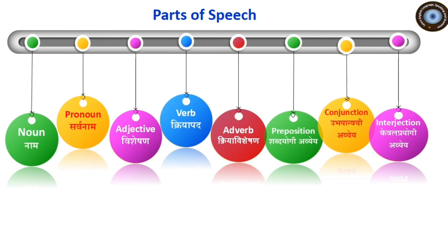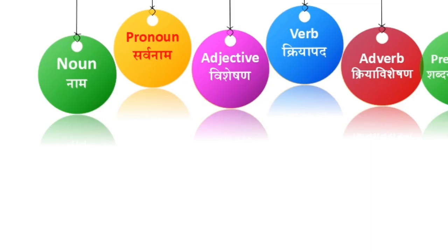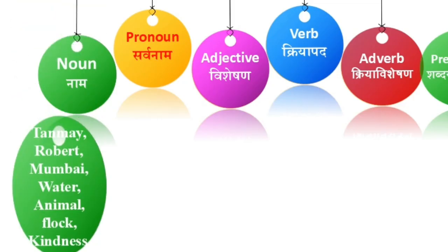Now let's take examples. For example, which person, place, or thing is a name — that is called a noun. The names like Tanmay, Robert, Mumbai, Water, Animal, Clock, and Kindness — these are all nouns. We will see the types of noun in a separate video.